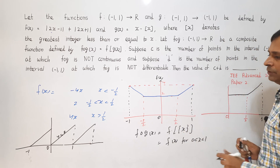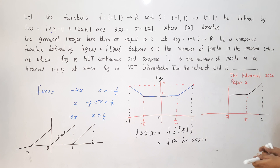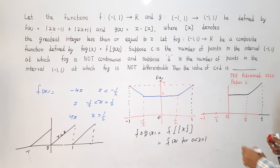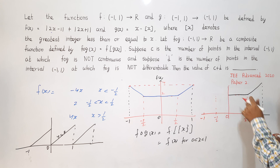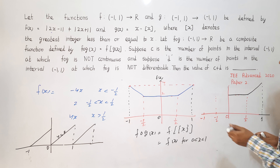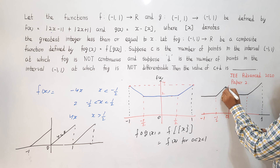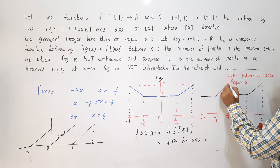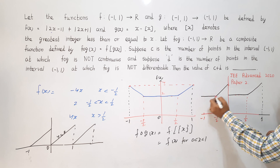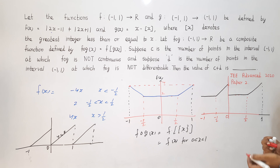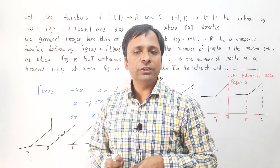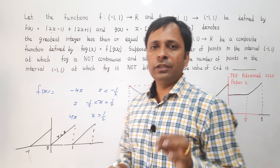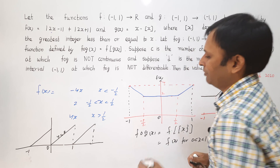Because the function is periodic, whatever happens between 0 to 1 is replicated between −1 to 0. At x = 0, you can clearly see the function has a discontinuity — we need to lift the pen at that point. So in the interval from −1 to 1, the function fog is not continuous only at x = 0. Therefore c = 1.